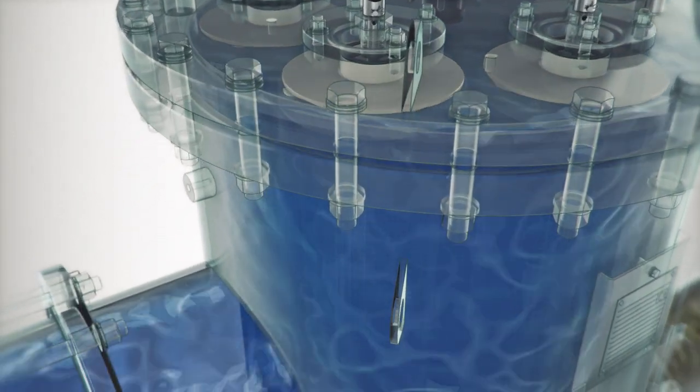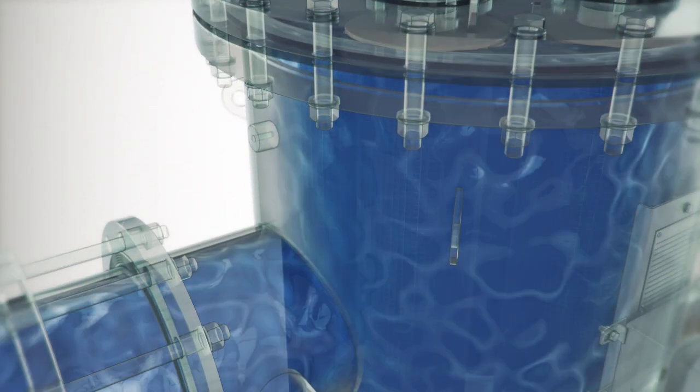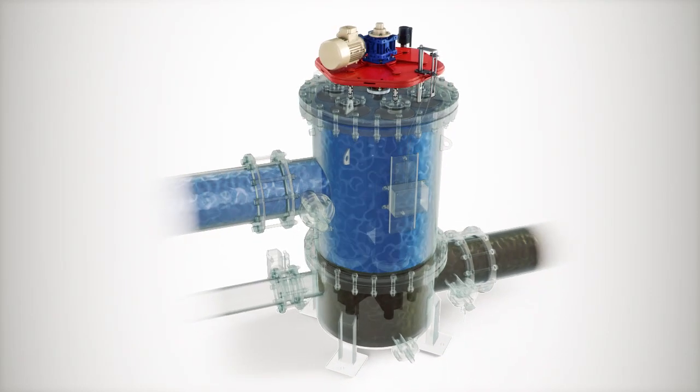The PLC constantly monitors differential pressure development across the filter by means of a DP transmitter.